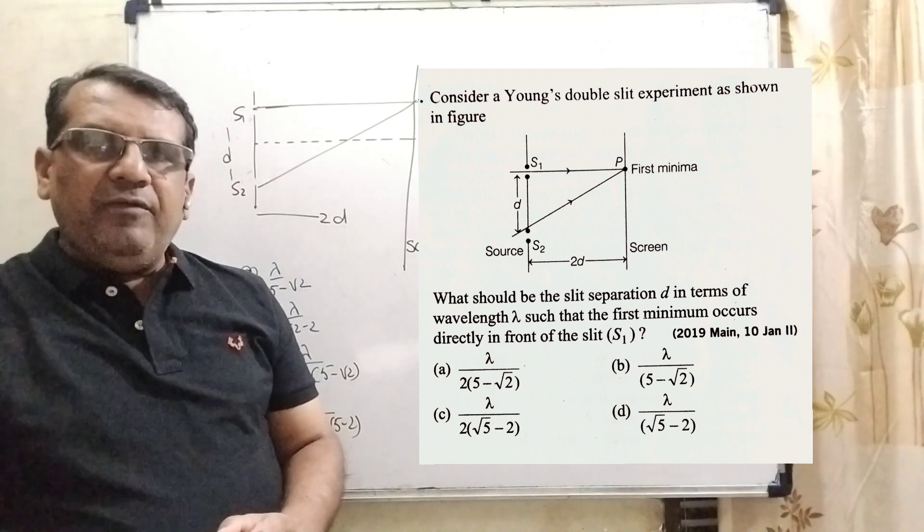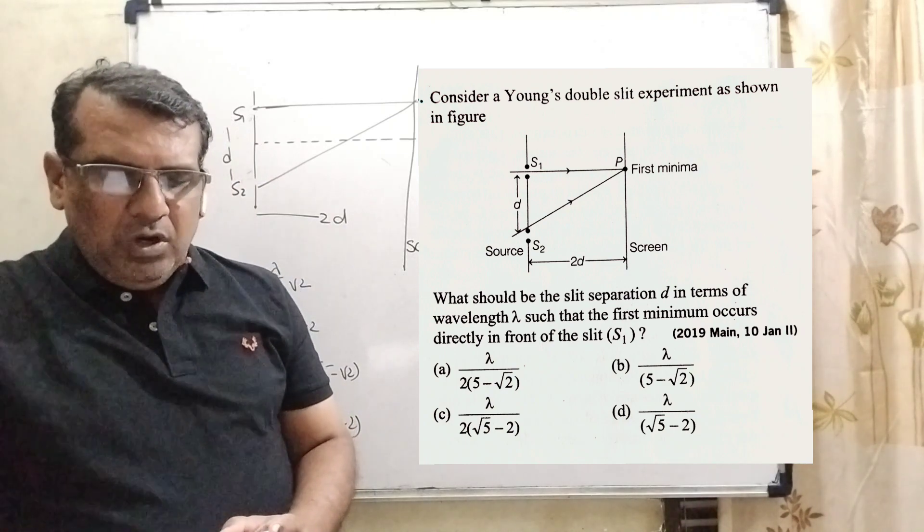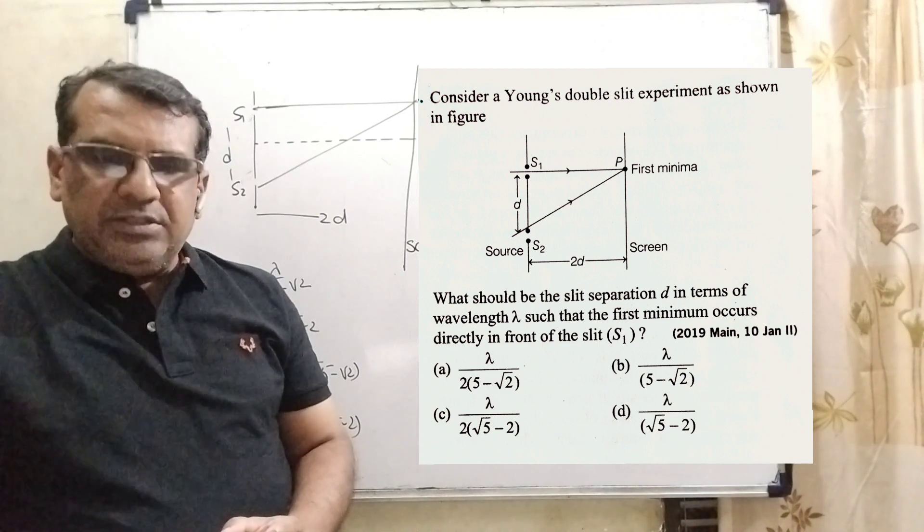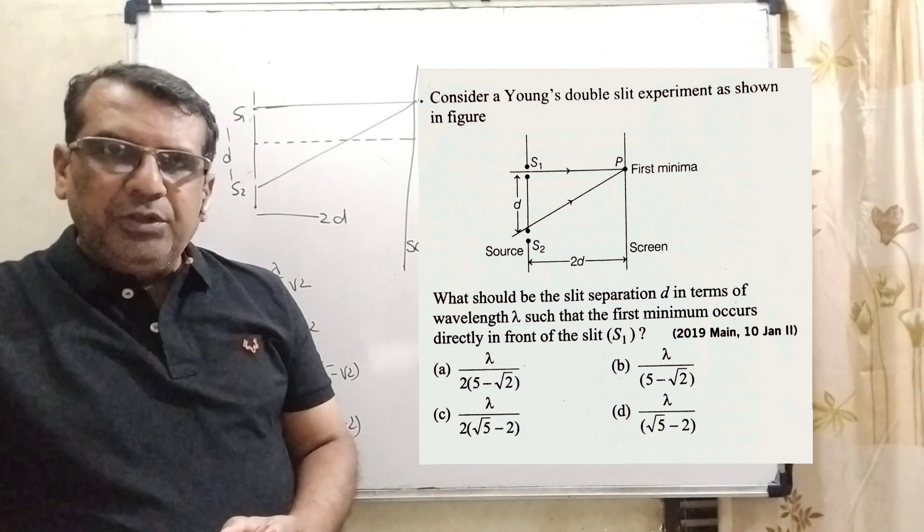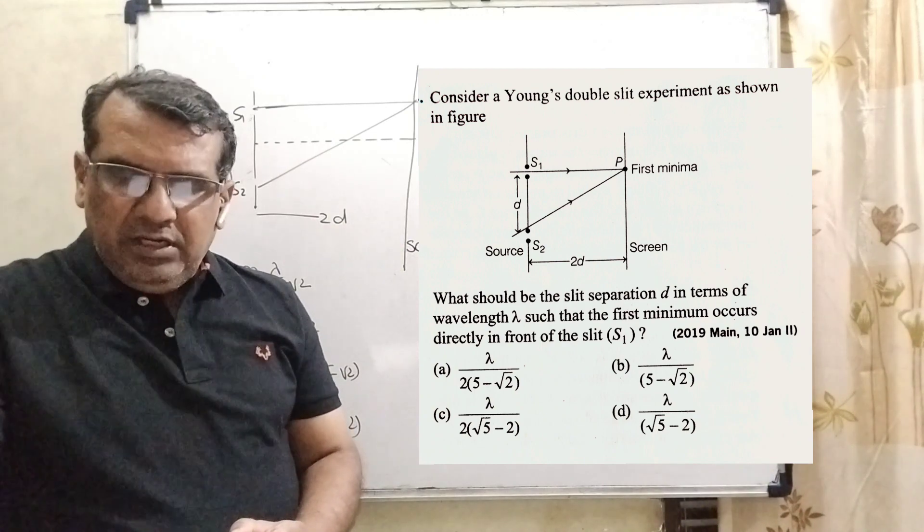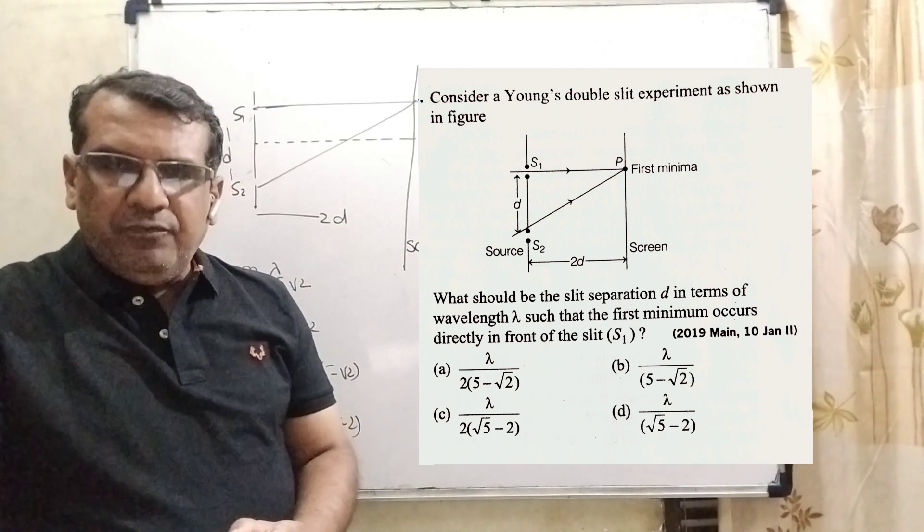Option A: lambda by 5 minus root 2. Option B: lambda by root 2 minus 2. Option C: lambda by 2 into bracket 5 minus root 2. Option D: lambda by 2 into root 5 minus 2.